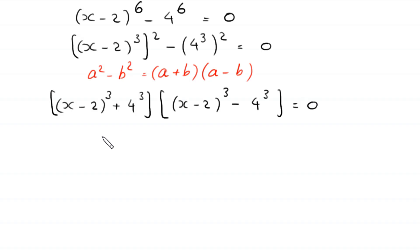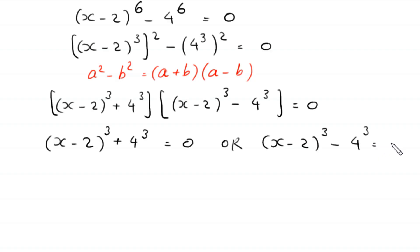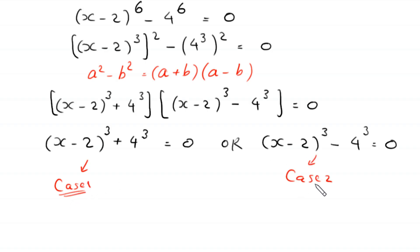This expression becomes [(x minus 2) cubed plus 4 cubed] times [(x minus 2) cubed minus 4 cubed] equals 0. From here, either (x minus 2) cubed plus 4 cubed equals 0, or (x minus 2) cubed minus 4 cubed equals 0. So we have two cases: Case 1 and Case 2.